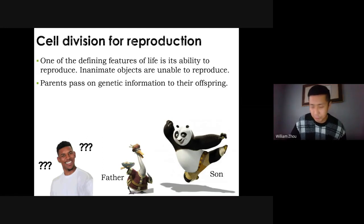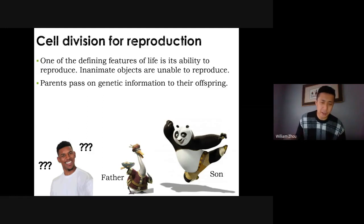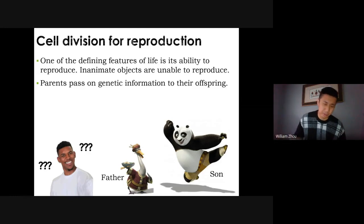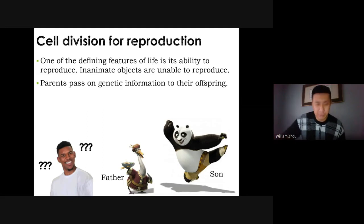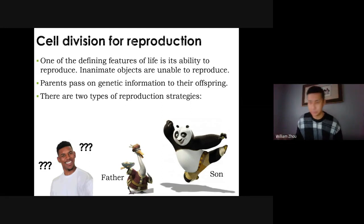When you reproduce, parents pass down genetic information to their offspring. You resemble your biological parents to some extent — your hair color, skin color, eyes, height, and other features somewhat resemble your parents. You are a mixture of their genetic information, and it is very rare not to share hair, eye color, or skin color with your parents.